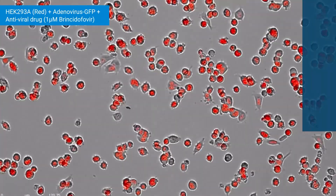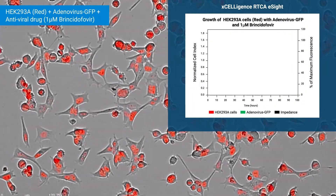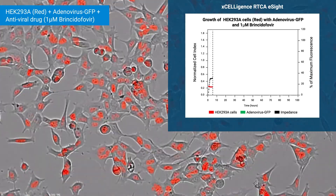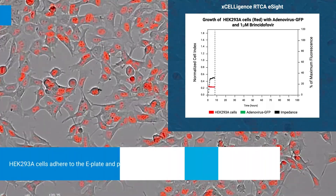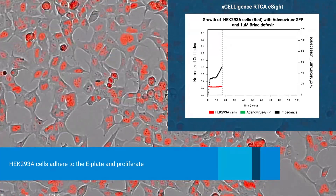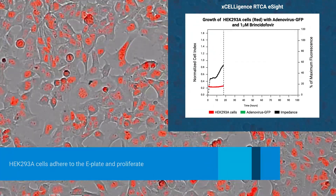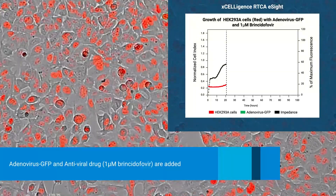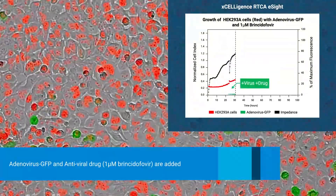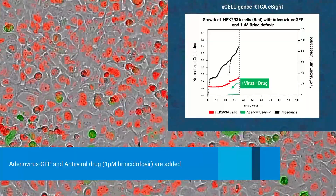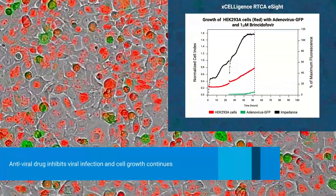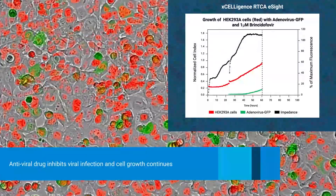In another well, the antiviral drug BRIN-Sidofovir is tested for its ability to inhibit adenovirus GFP infection. Similar to the control, cells adhere to the e-plate and proliferate. But this time, when virus and drug are added together at the 24-hour time point, cells continue to grow efficiently. Very little virus GFP is produced, and the cytopathic effect is blocked.